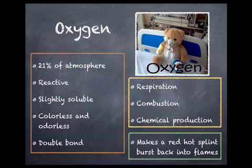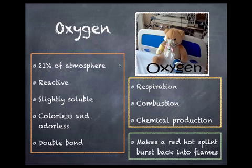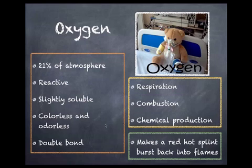Where is oxygen used? It's used in respiration — we breathe in oxygen and use it to produce our energy. It's also used in combustion, and a lot in chemical production when we need to oxidise things. To test for oxygen, what we use is a red-hot splint, and in the presence of oxygen it will burst back into flames. I'll give you a demonstration of that on the next slide. So oxygen is used for respiration, combustion, and production of chemicals, and it makes a red-hot splint burst back into flames.